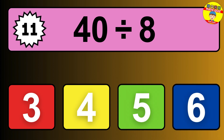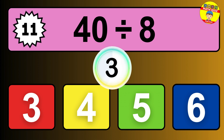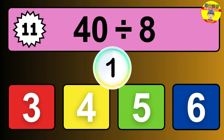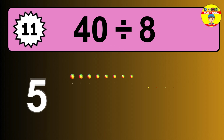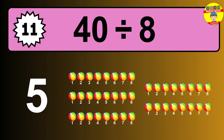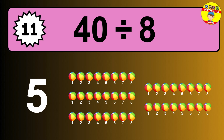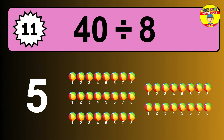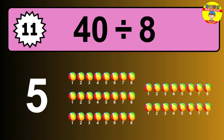40 divided by 8 is... time to think. Let's go to the solution. Divide the number 40 by 8. Each group contains 8 units. So dividing 40 by 8 results in 5 equal groups. Thus, the result is... 40 divided by 8 equals 5.